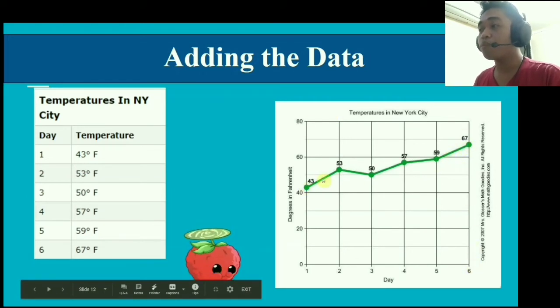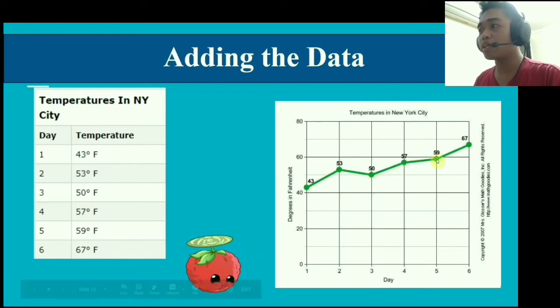After adding the data into the graph or adding the points into the graph, we connect them all with a line segment. But you can see here that it's not actually a line, a straight line, but more of a broken line, hence the name broken line graph.